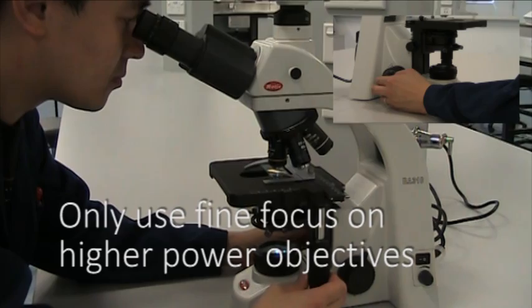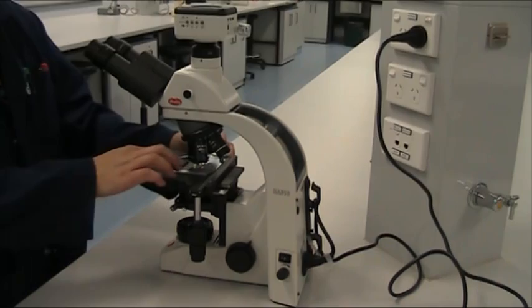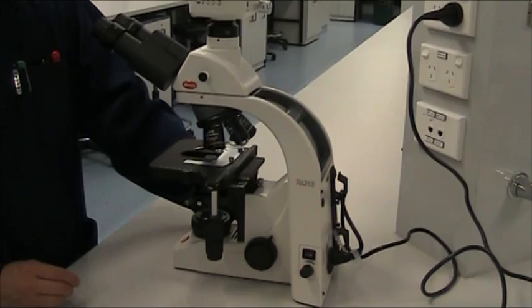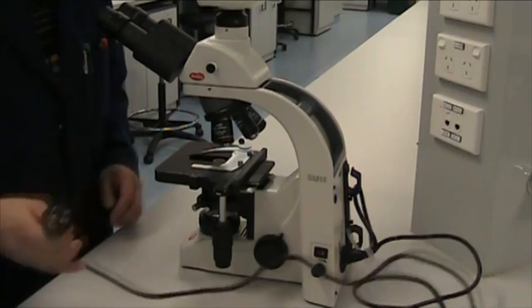When you are done with the microscope, remove your slide, switch the microscope off, swing the lowest power objective into place and lower the stage. Wrap up the power cable and using both hands, place the microscope back into a dust proof storage area.